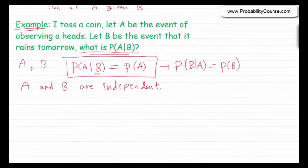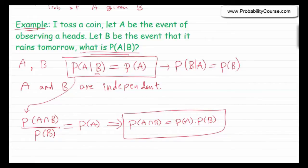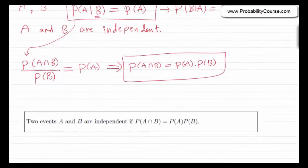Now let's play with this a little bit. The probability of A given B, as we have seen, is the probability of A and B — or A intersection B — divided by the probability of B. If two events are independent, then this must be equal to the probability of A, which results in probability of A and B being equal to probability of A times probability of B. So in fact, this is the definition of two independent events: A and B are independent if probability of A and B equals probability of A times probability of B.